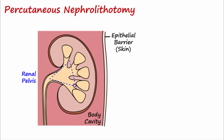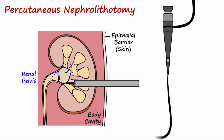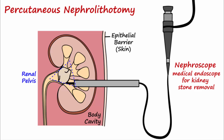Treatment for large stones often requires a surgical procedure known as percutaneous nephrolithotomy, where a small hole is made in the back to access the kidney. A camera is inserted through the hole and allows for visualization of the stone, which is then pulverized using ultrasound, lasers, or a pneumatic device.